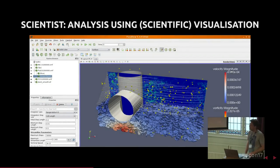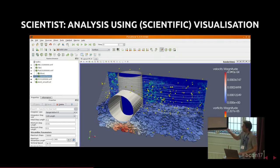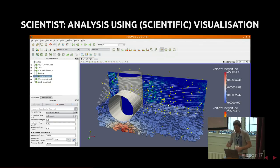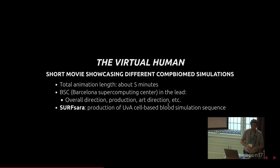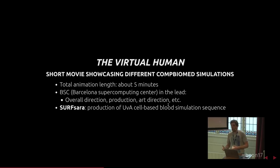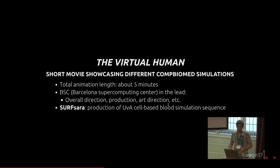When scientists work on these simulations, they use visualization tools like ParaView — a very functional representation with colors showing cell velocity, streamlines showing flow, and so on. But we wanted to produce a nice movie. Within the ComBioMed project, we had an idea to produce a virtual human movie — a short five-minute film showing all kinds of these simulations with nice animations and a voiceover. The Barcelona Supercomputing Center was in the lead for art direction, and we produced these cell-based blood simulations.